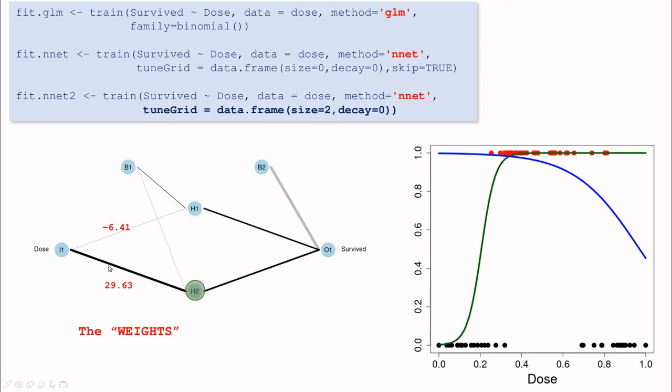What about the other one? Again, multiply this weight by this number, by the input, and then add the bias, use the activation function, and then we get this curve. And again, what is happening here, the green line is specializing in this part of the graph. It's telling us the probability of low levels of the drug increasing the probability of survival of the patient.